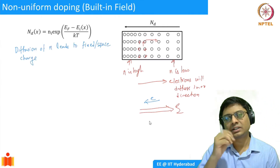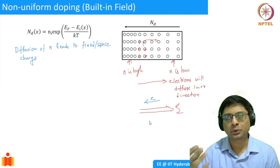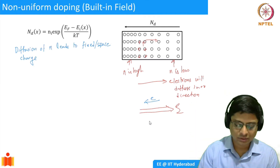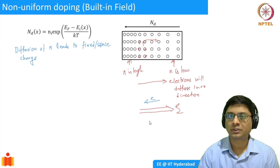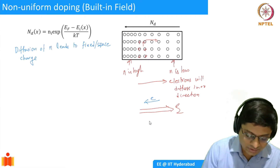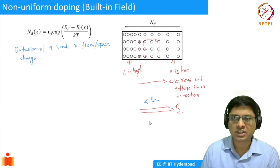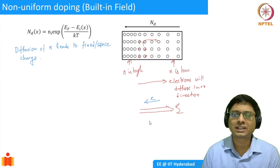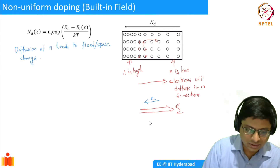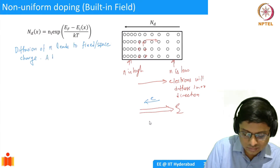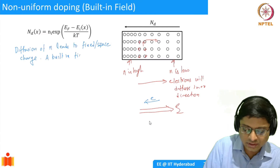By space charge we mean essentially that the dopant atoms are exposed — you remove an electron and you're left with a positive charge. That's a fixed charge that cannot move; the dopant atoms are bonded to the lattice. So it leads to a fixed charge, and we can compute the electric field associated with it by applying Gauss's law. This results in a built-in field.